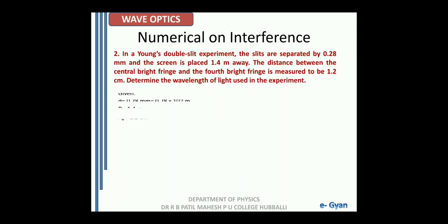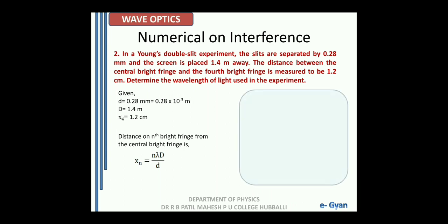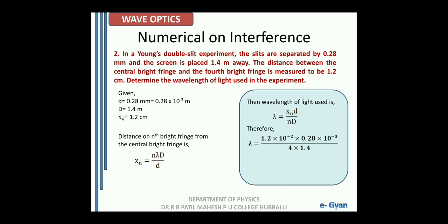Taking these conditions into account, d is equal to 0.28 mm, capital D is 1.4 meter, and distance of 4th bright fringe from central bright fringe is 1.2 centimeter. The distance of the nth bright fringe from the central bright fringe is x_n equal to n into lambda into capital D by small d. So wavelength lambda is equal to x_n into small d divided by n into capital D. On substituting the respective values, we get lambda equal to 0.06 into 10 raised to minus 5 meter, which is 600 into 10 raised to minus 9 meter, equal to 600 nanometer.